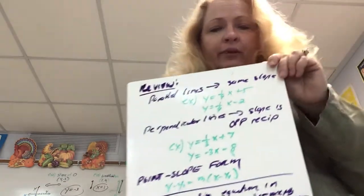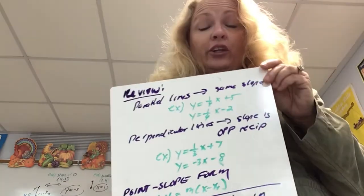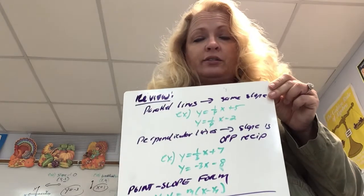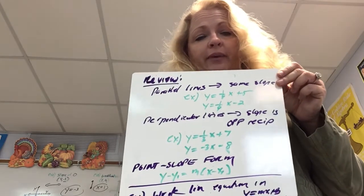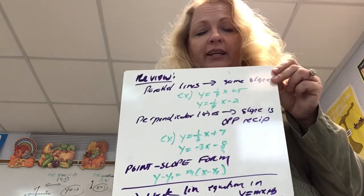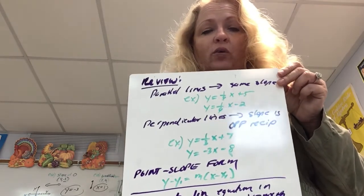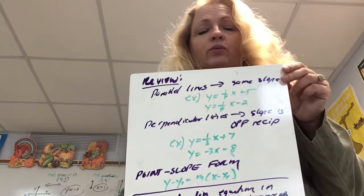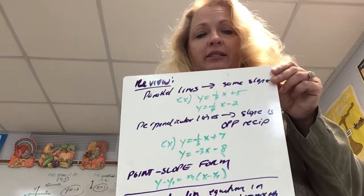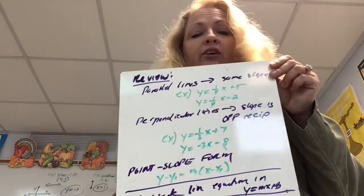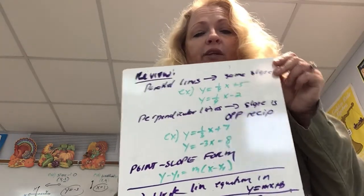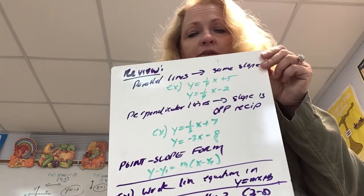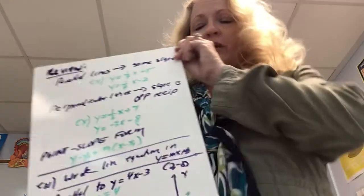Remember, perpendicular lines intersect to form right angles. So if they're intersecting, we know that they are going in opposite directions. Perpendicular lines are not only opposites, but they are also reciprocals of each other.